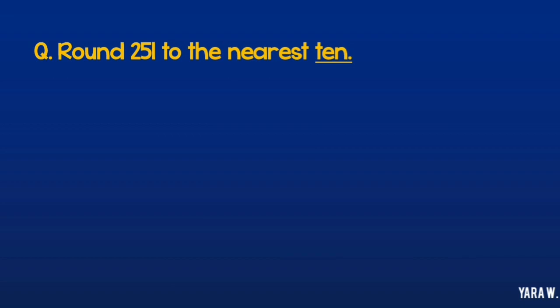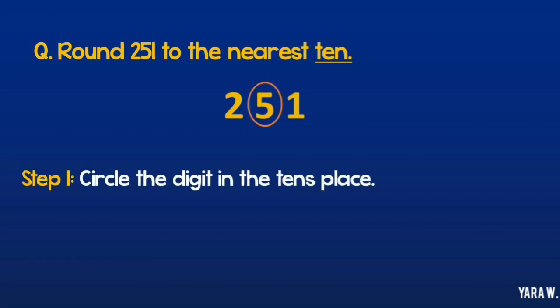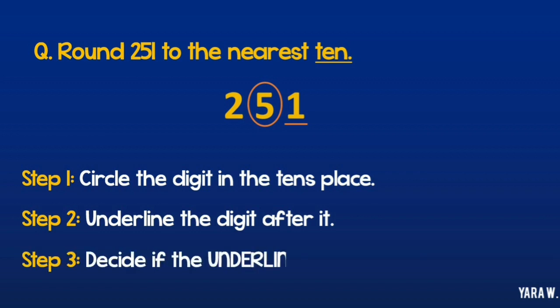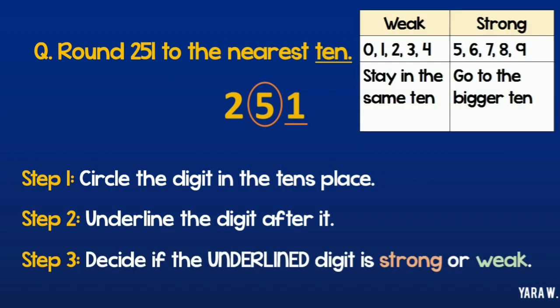Round 251 to the nearest 10. Here's 251. Remember the steps. Step 1: Circle the digit in the tens place, which is the 5. Step number 2: Underline the digit and check if it is strong or weak. Again, look at the table.